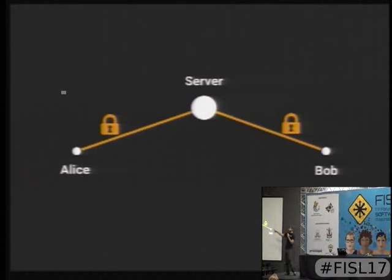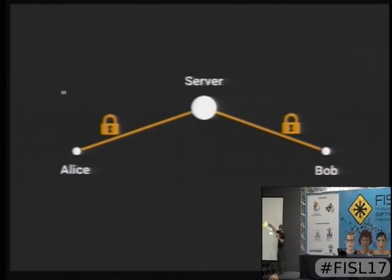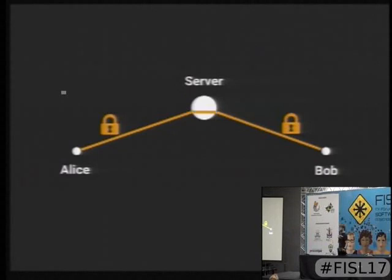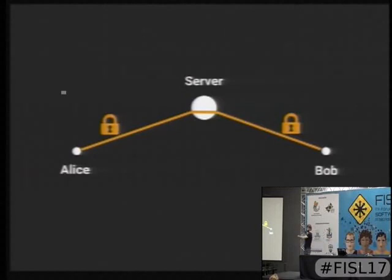This has been the case for a long time with many things we use. At least people snooping on the connection cannot see what's going on, but it gets decrypted at the server, which is not nice. That's why people came up with end-to-end encryption — the encryption goes through the server and only gets decrypted at Bob's computer where Bob can read it.